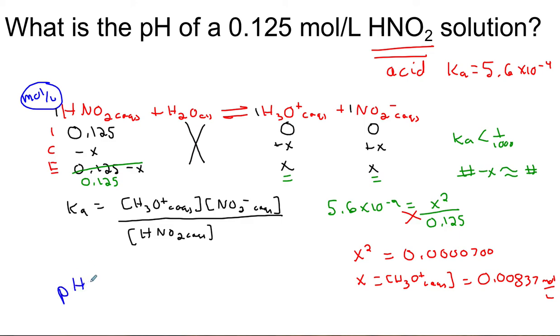We can finally solve this. Now that we know the hydronium concentration we can solve for the pH. That is going to be the negative log of our hydronium concentration. We have to make sure that concentration is in moles per liter. You get 2.08.